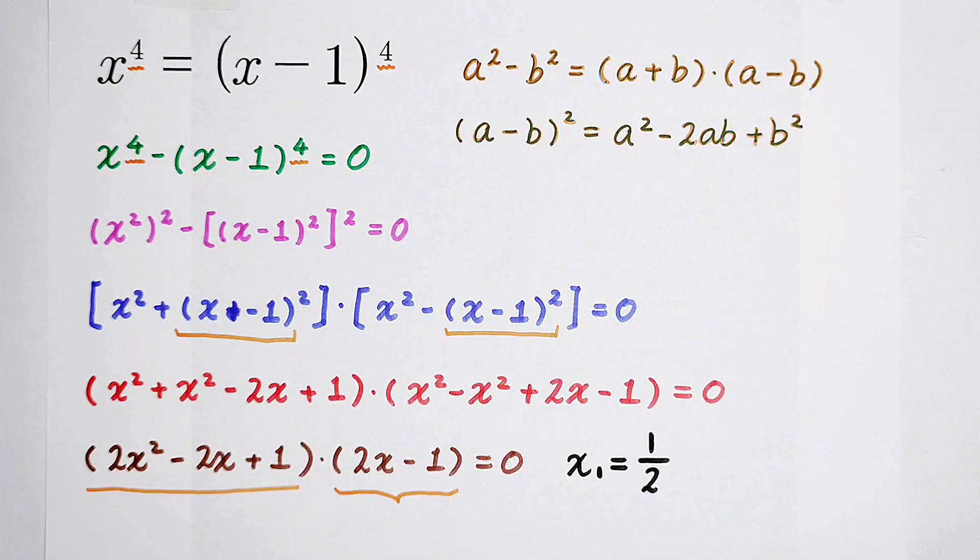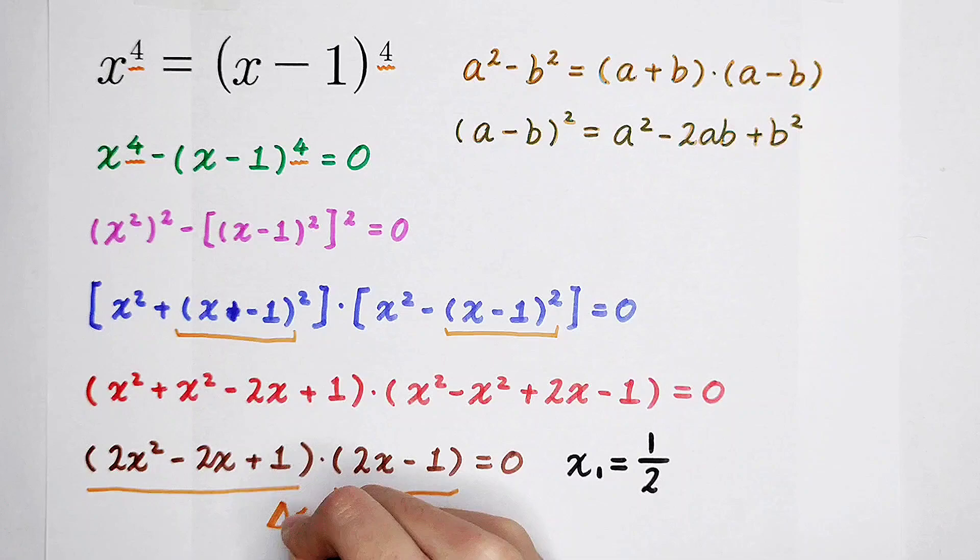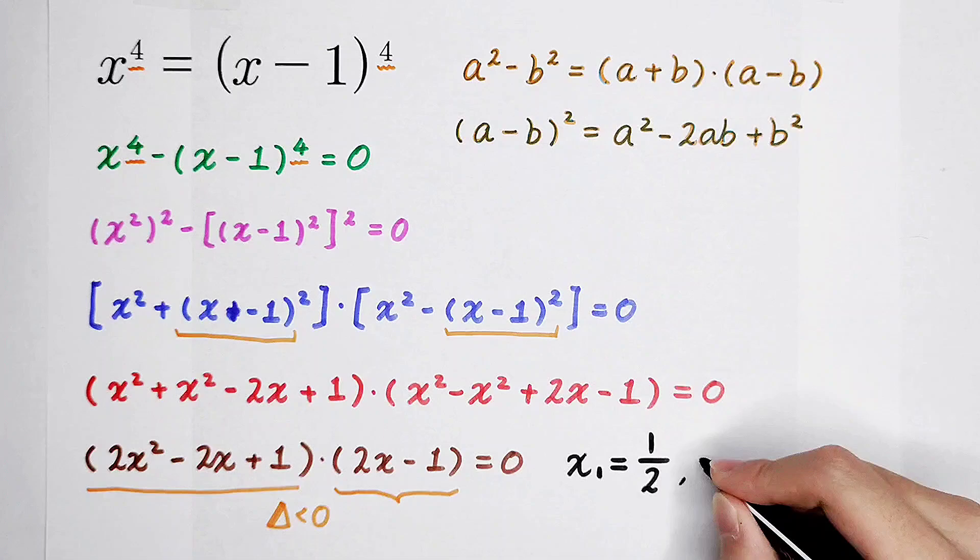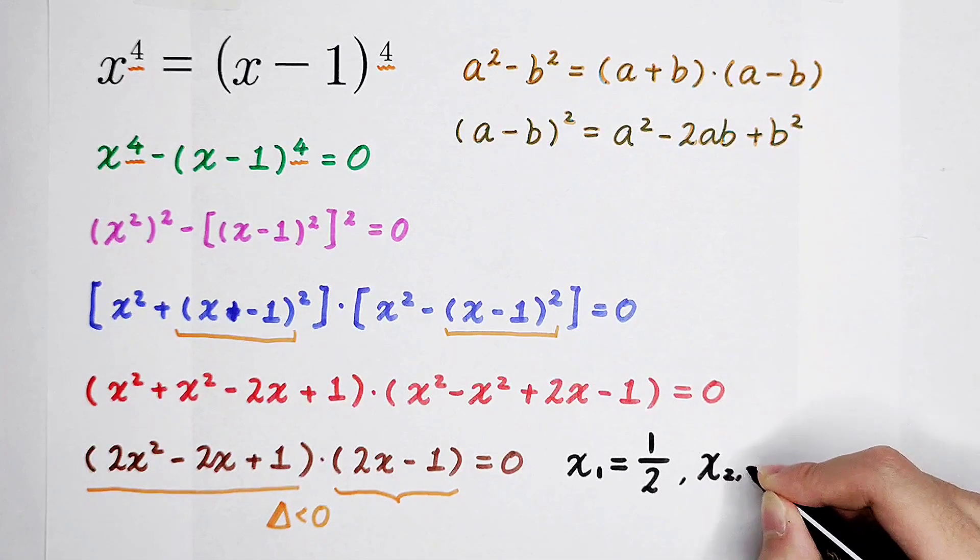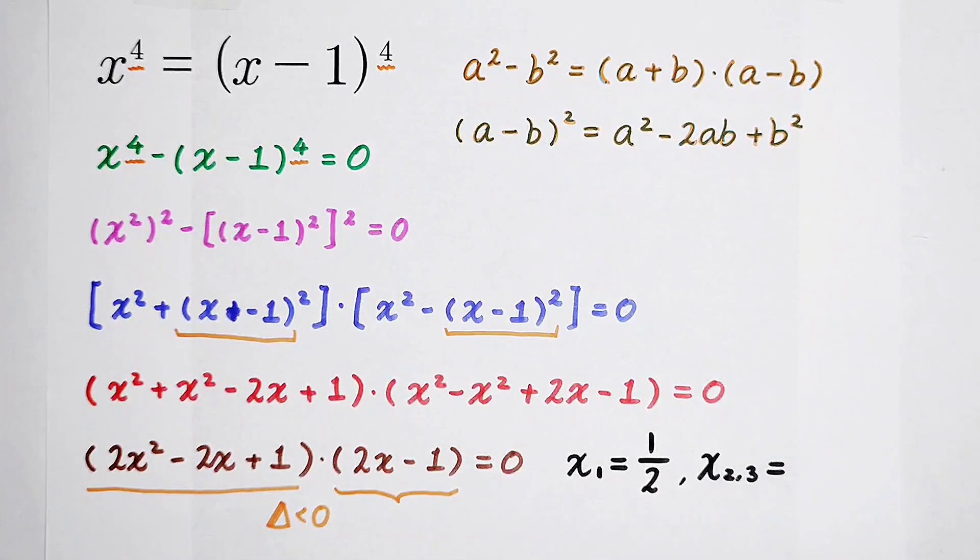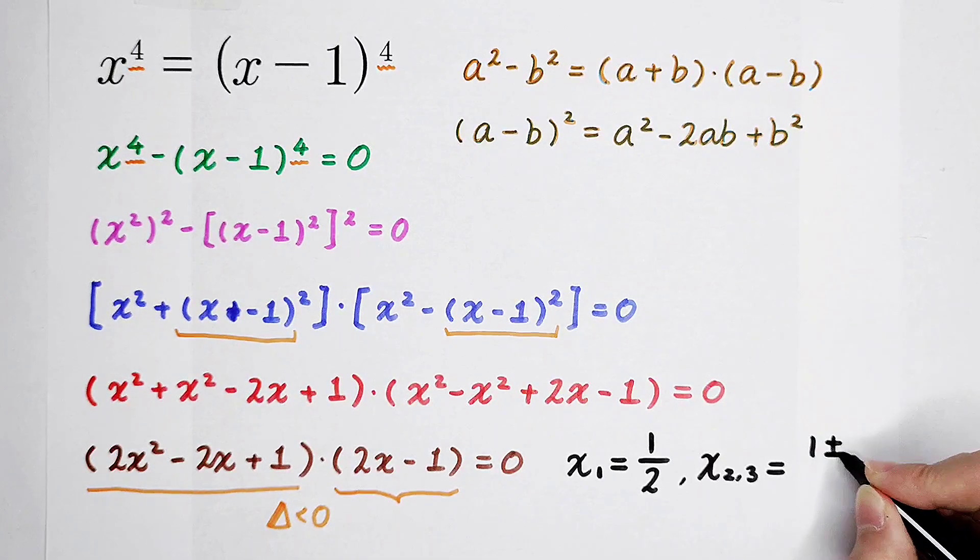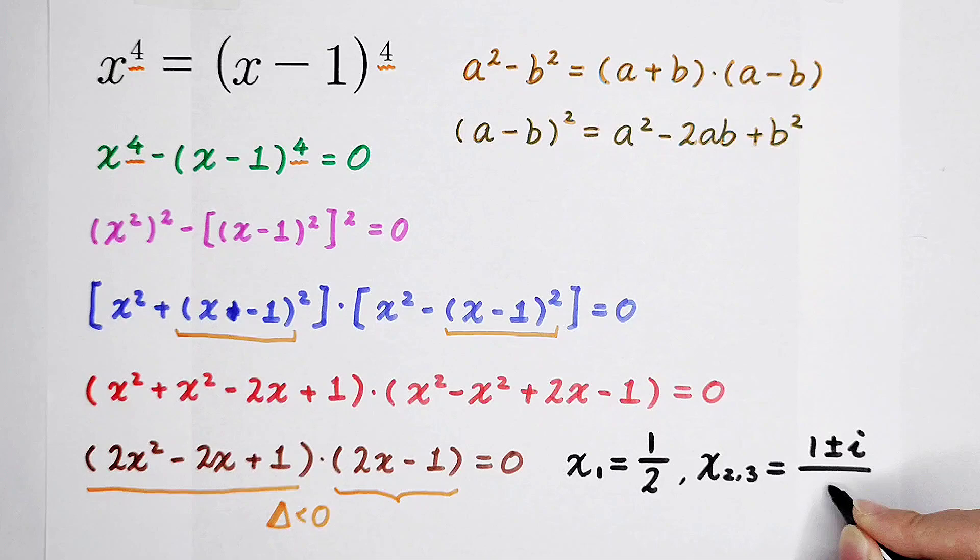If this is equal to 0, you can find that the delta is smaller than 0. That means there aren't any real roots. But we can solve the other two complex roots. x2 and x3 is equal to, from the formula, we can get 1 plus or minus i, all divided by 2.